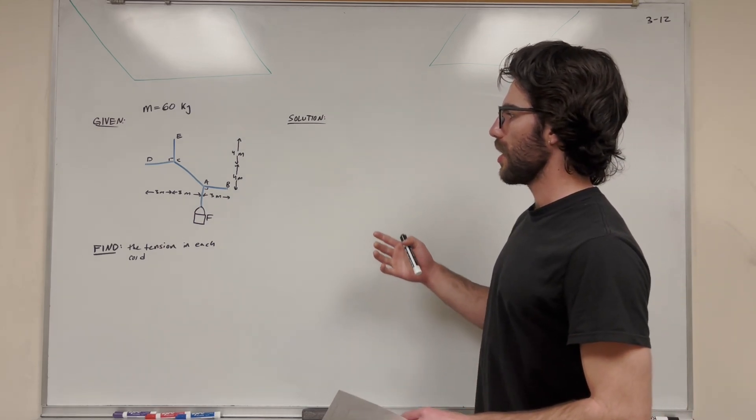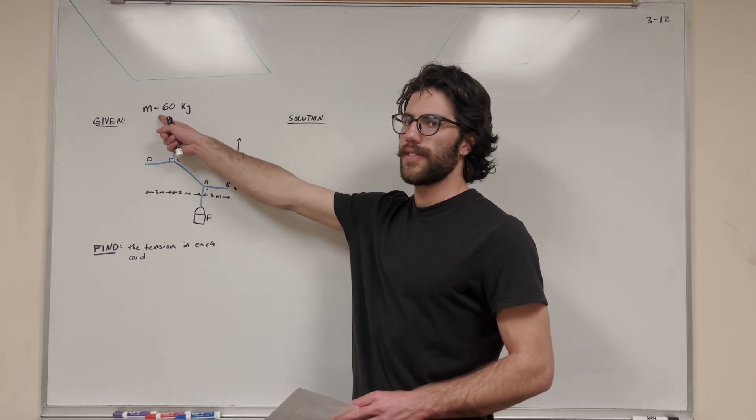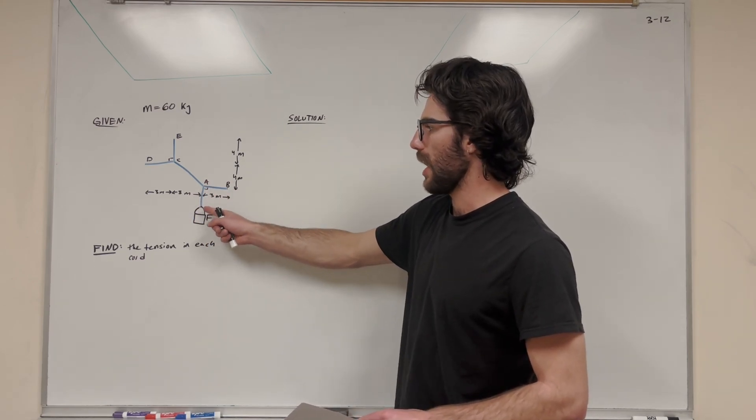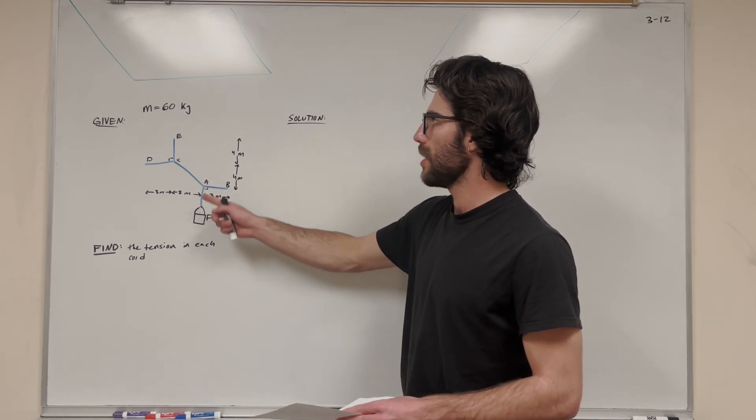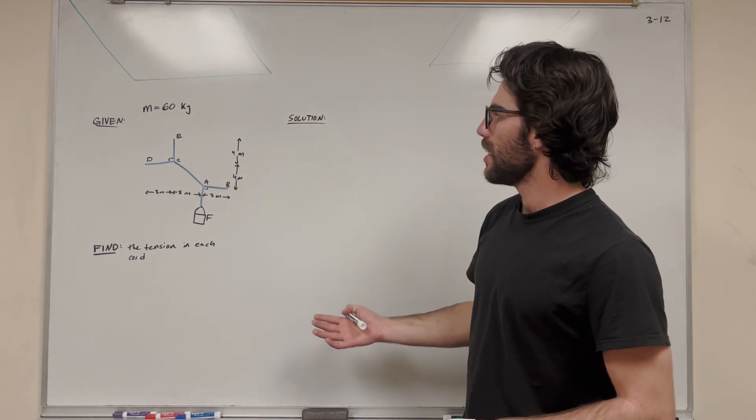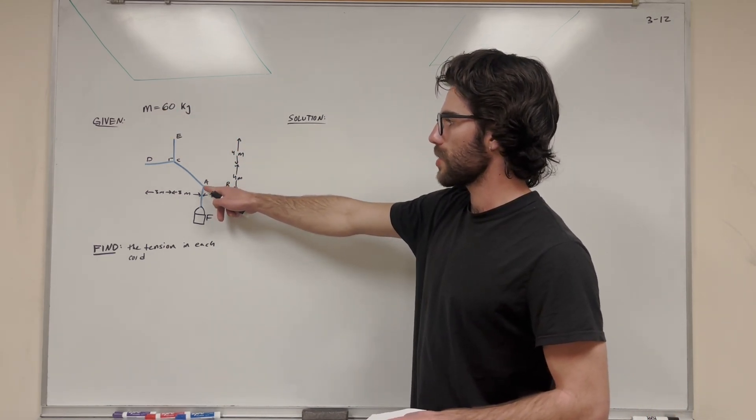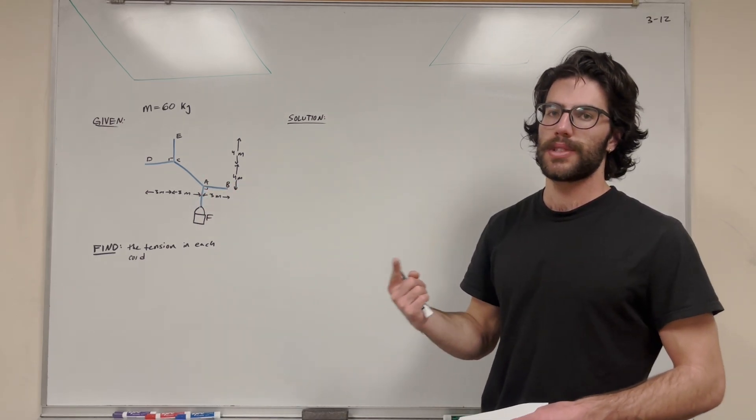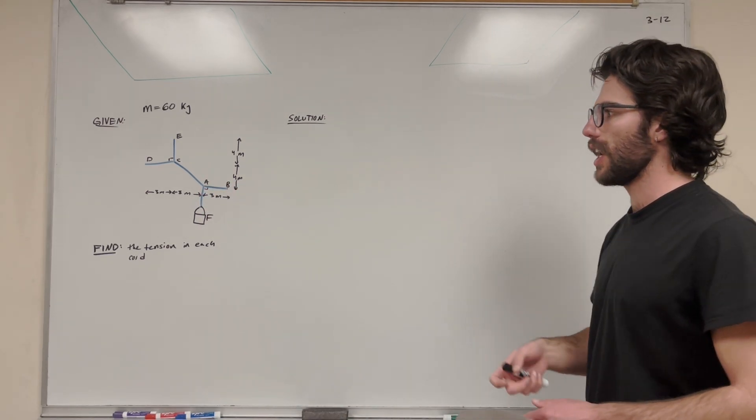Here's how I do it. We know one thing. We're given one piece of information, which is the mass of the bucket. And if we know the mass of this bucket, we know the tension in cord AF, right? Cord AF is going to be 60 kilograms in whatever amount of force that is. So if we know this one force, we can start at point A, because there's three forces acting at A, and we already know one of them. So we'll have two other forces to find. So let's start at A.